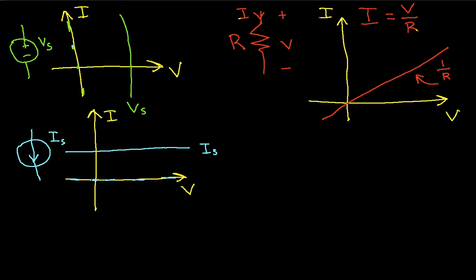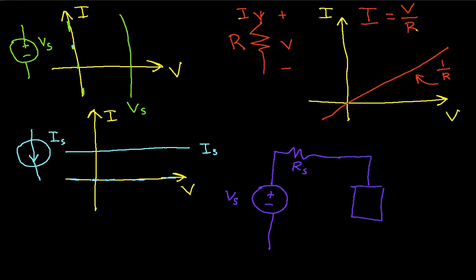Let's suppose I have a circuit that looks like this. This is my circuit element — I'll call it E. I still have a current I and a voltage across this element V. The question is, can I use these VI curves to solve for the circuit? And the answer is yes, I can do that quite nicely.